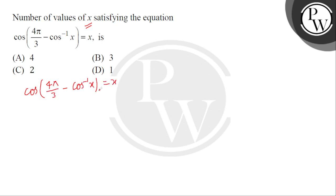So we have to rearrange this equation. Here 4π/3 - cos^(-1)x = cos^(-1)x. Canceling and rearranging, cos^(-1)x = π/3.